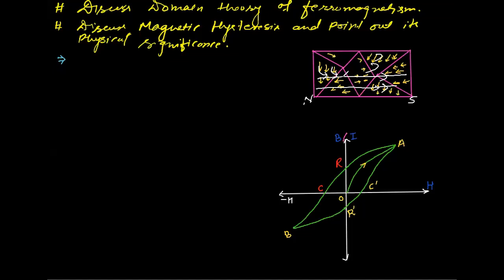We change the magnetizing field repeatedly. As we increase the magnetizing field in the material, the total magnetic field increases. At a certain point, the magnetization will reach saturation — this is called the point of saturation. We place a soft iron core inside a solenoid and vary the current to observe how the intensity of magnetization changes.